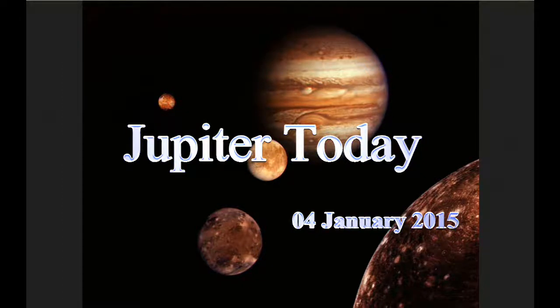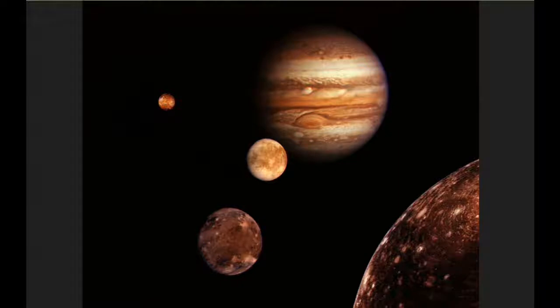At zero hours UTC, the position of Jupiter on the celestial sphere is a right ascension of 9 hours, 35 minutes, 55.2 seconds, and a declination of positive 15 degrees, 13 minutes, 0.9 seconds.